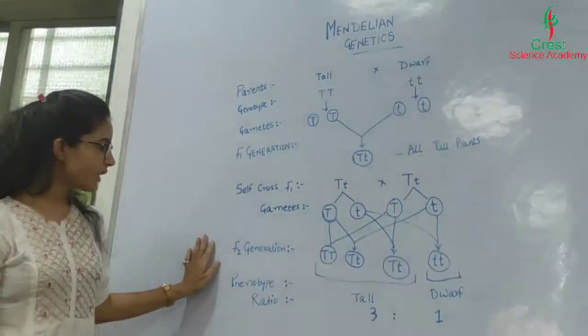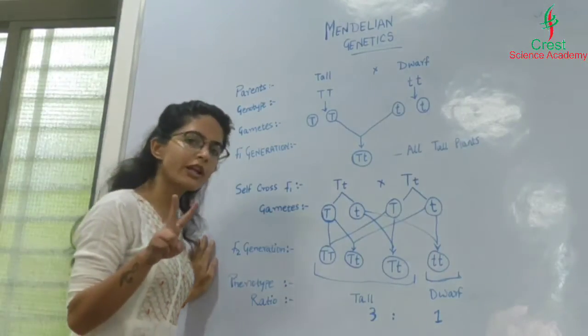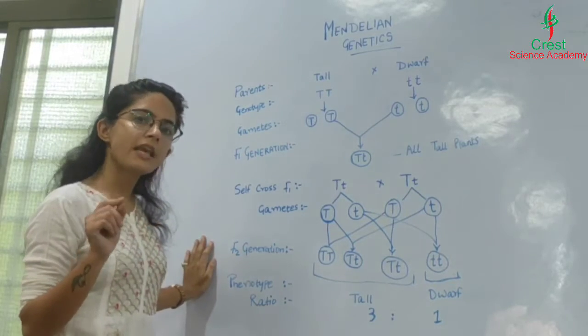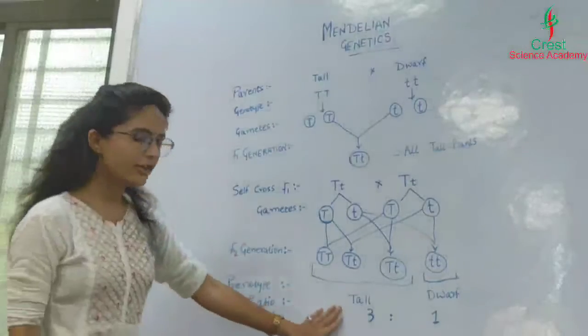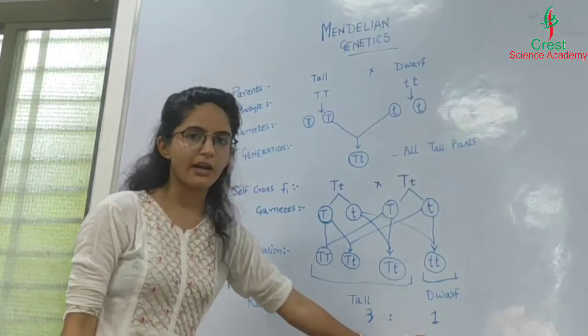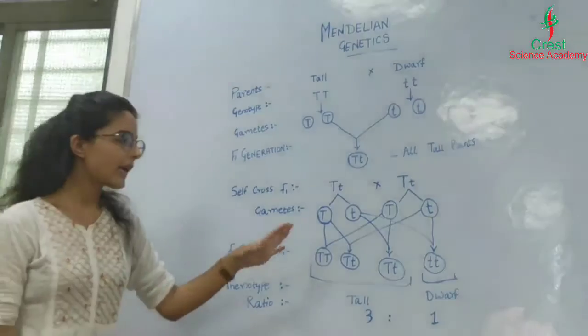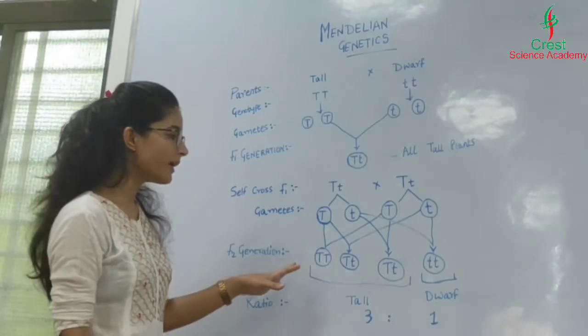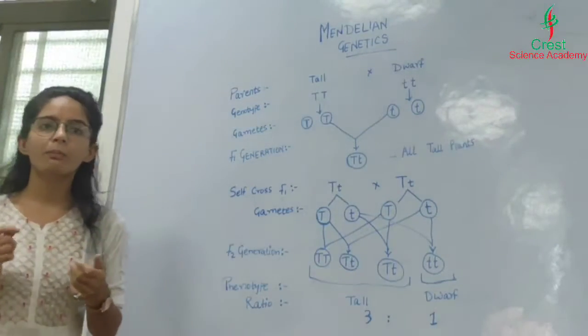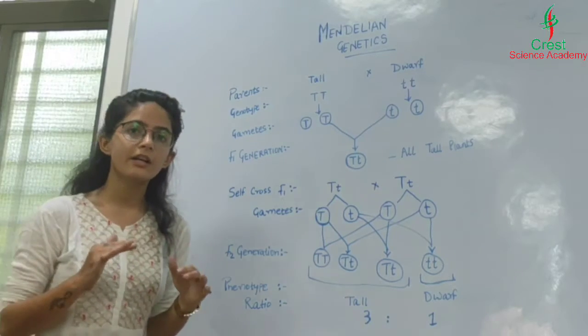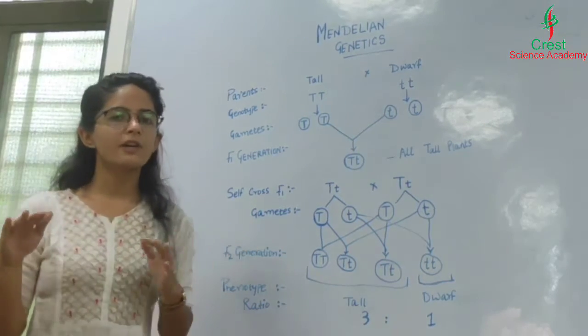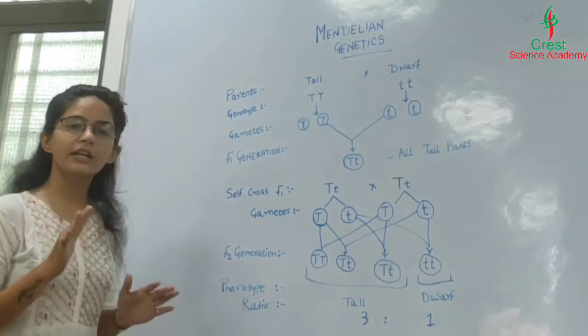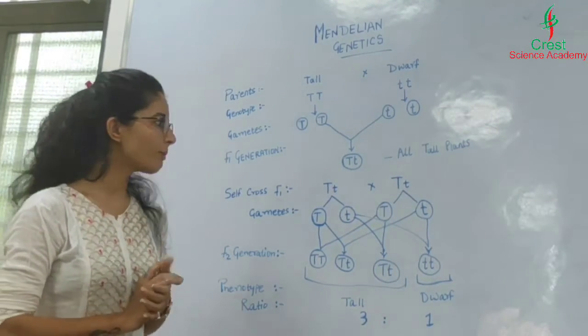In F2 generation, Mendel got both types of phenotypes—the same phenotypes he selected for the parents. He got three tall plants and one dwarf plant, which helped him conclude that capital T is dominant. However, he did not obtain any plant with intermediate stem height. The plants were either tall or short; no intermediate stem length was obtained.